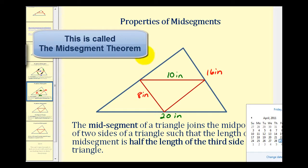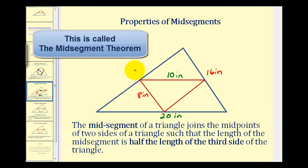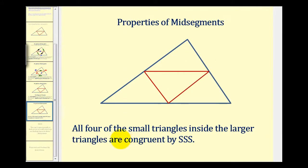So in general, if the length of this side was 2x inches, then the length of the mid-segment would be x inches. The last property we'll discuss in this video is that all four small triangles inside the larger triangle are congruent by side, side, side.